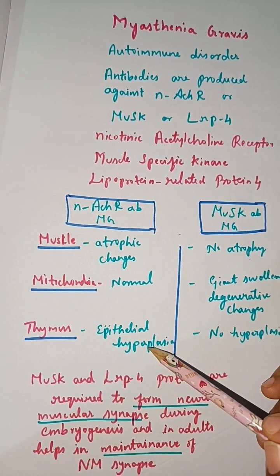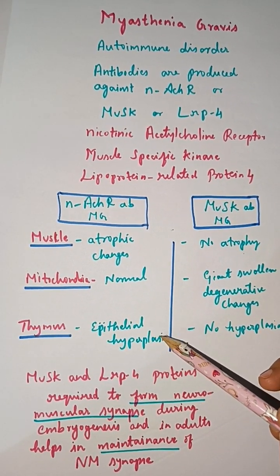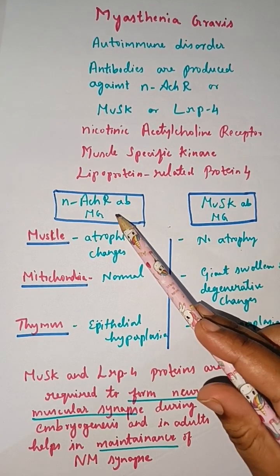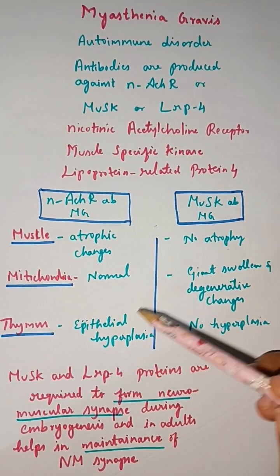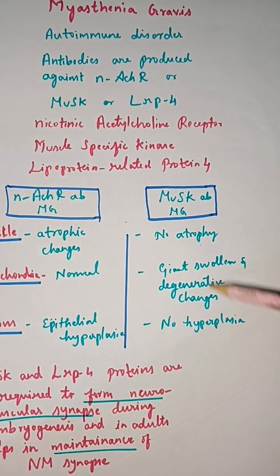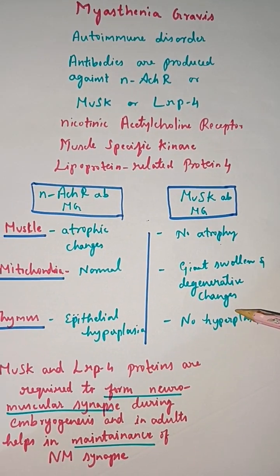In the thymus, there is epithelial cell hyperplasia in acetylcholine receptor antibody myasthenia gravis, so thymectomy would be beneficial, but not so in MuSK antibody myasthenia gravis.